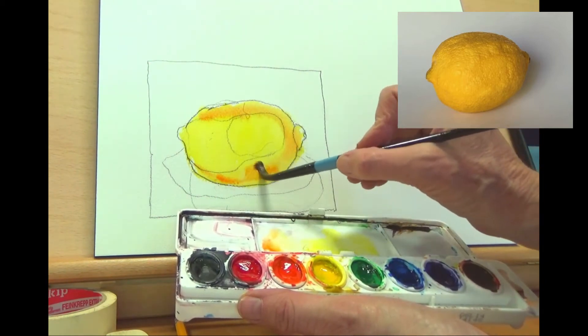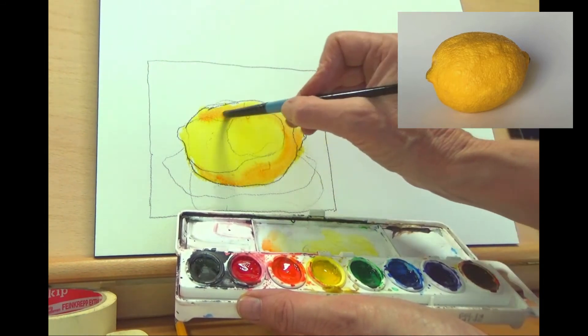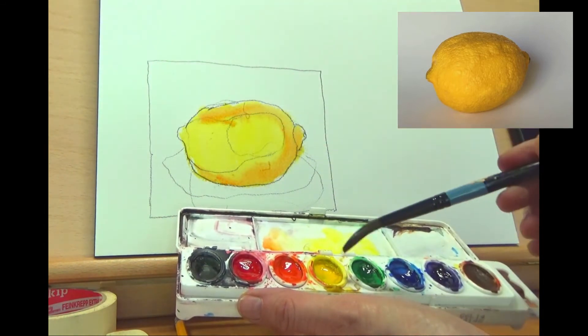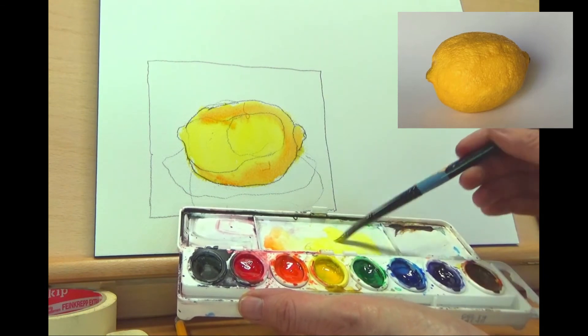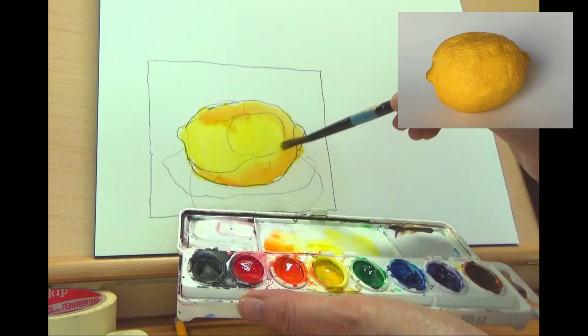If you notice, mine's vertical and it's still not dripping because I have just the right amount of water in there. I'm not digging. There's no puddles or anything. You have to really be careful with how much water.